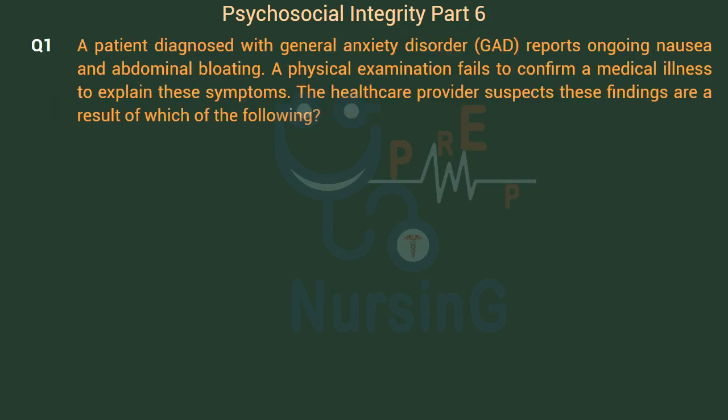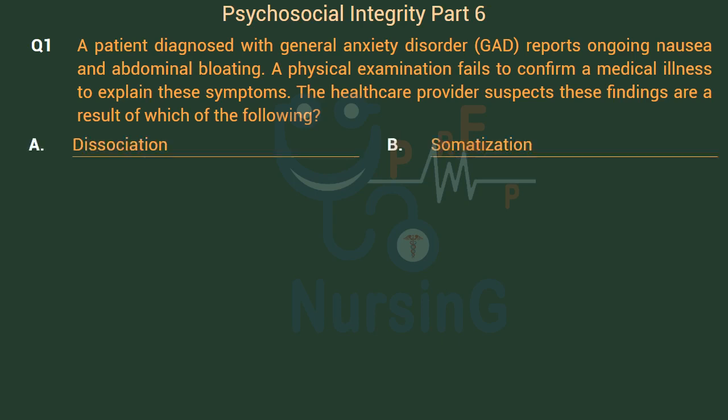A patient diagnosed with General Anxiety Disorder reports ongoing nausea and abdominal bloating. A physical examination fails to confirm a medical illness to explain these symptoms. The healthcare provider suspects these findings are a result of which of the following? Option A: Dissociation. Option B: Somatization.